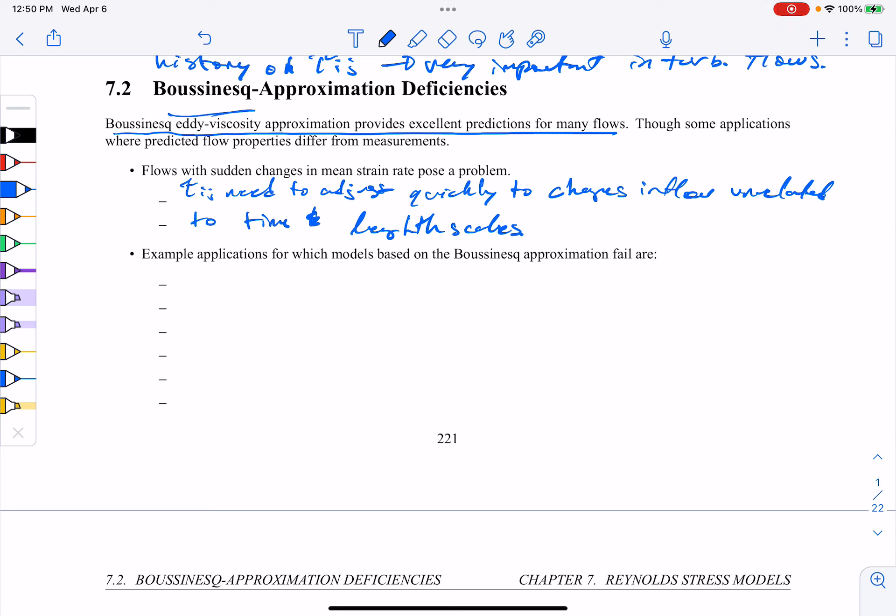So what are some example flows where the Boussinesq approximation probably fails? Well, maybe flows with sudden changes in mean strain. Say flows over curved surfaces. And I've noticed a lot of flight vehicles with curved surfaces. Flows in ducts with secondary flow motions.